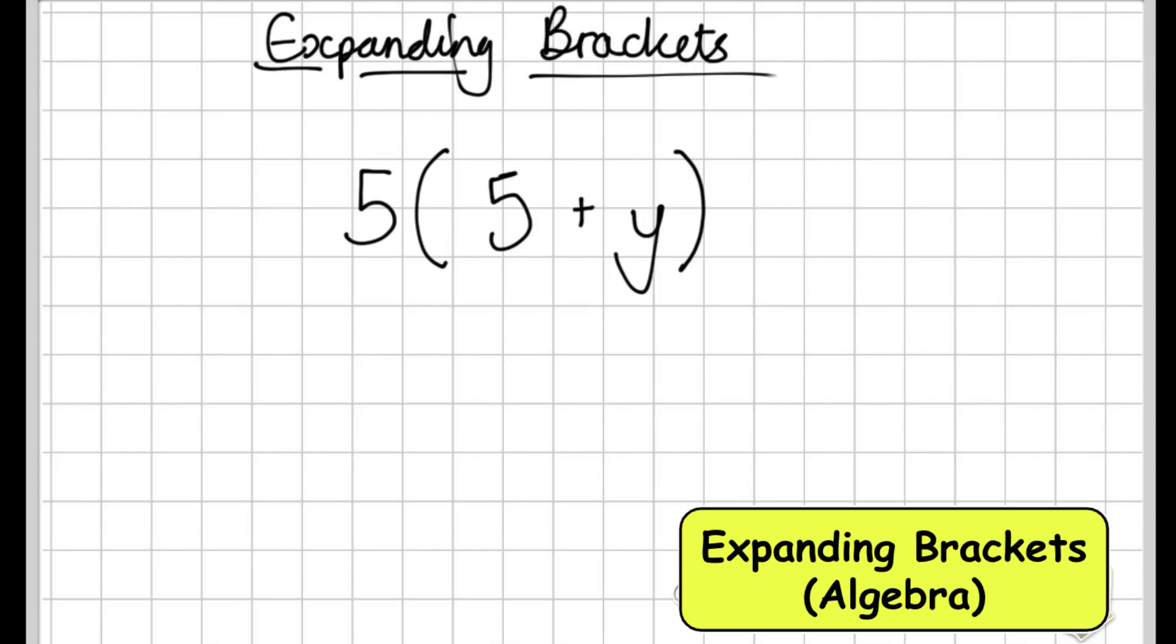So starting with the first example we have 5 and then we have brackets 5 plus y. So I start by looking at the number which is outside of the brackets which is 5 and I multiply it by the first number in the bracket first. So 5 multiplied by 5 gives me 25.